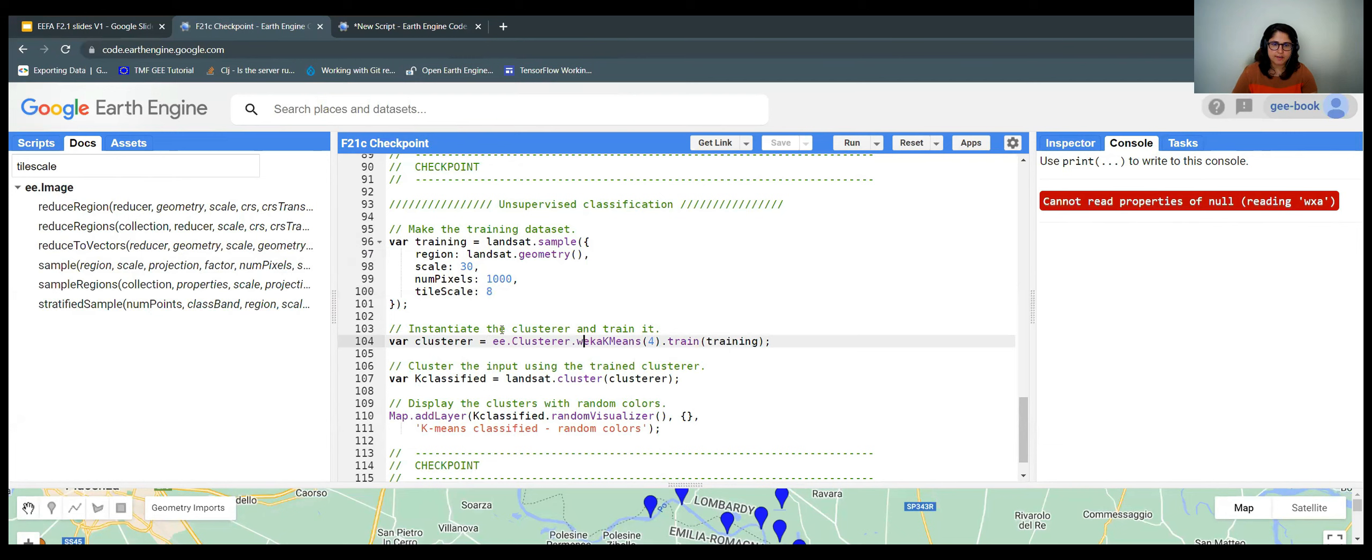Here I am selecting the clusterer. So I'm going to use the k-means, which is this one, WEKA k-means. I need to define the number of clusters I want. So I'm just going to use four because we have been working with four classes. And I use the training function here and provide this training data set, which is just the pixels.